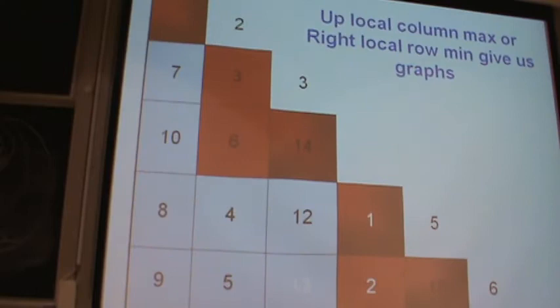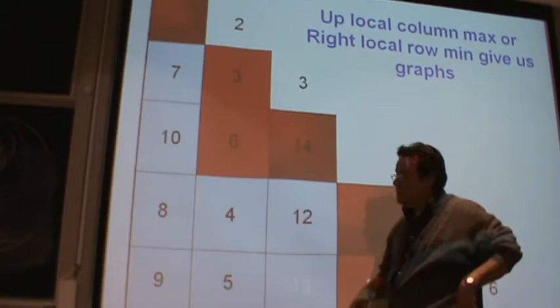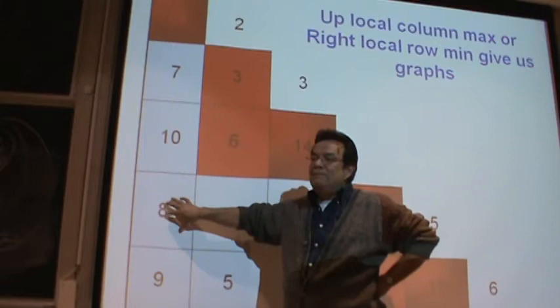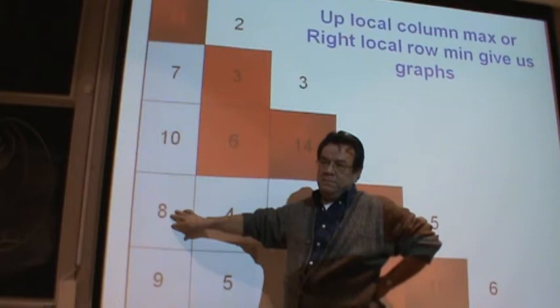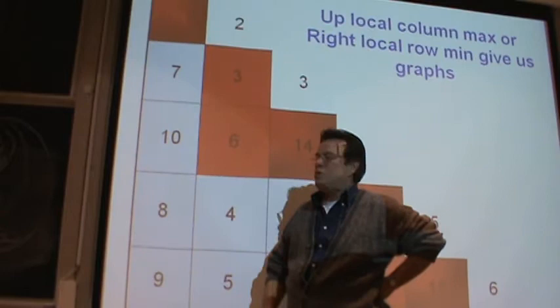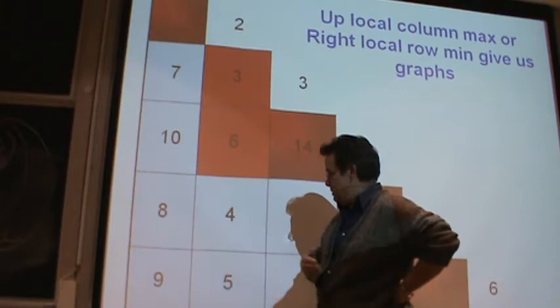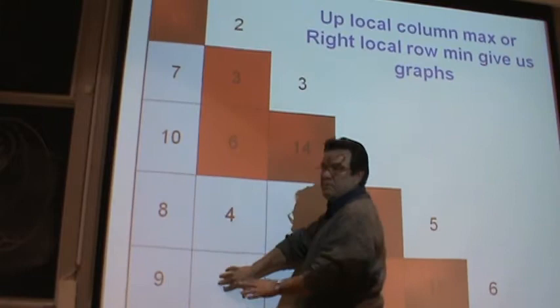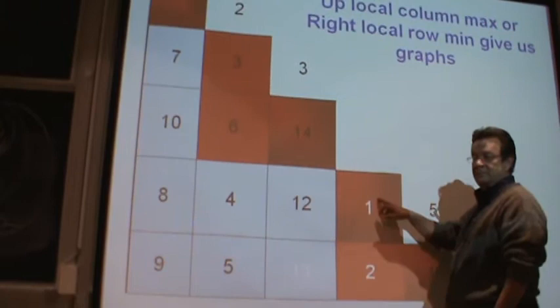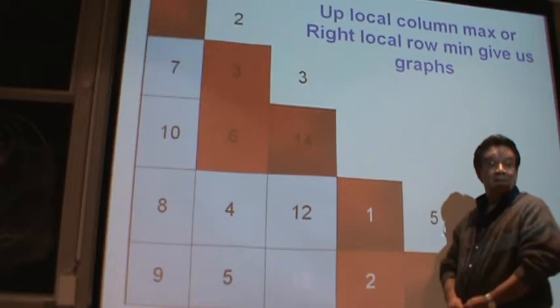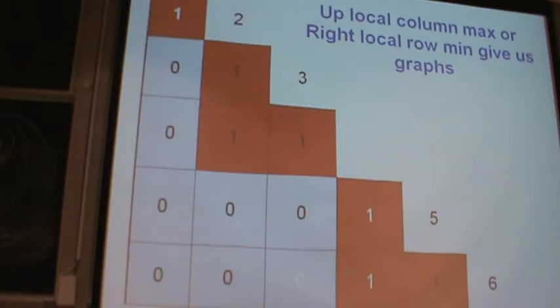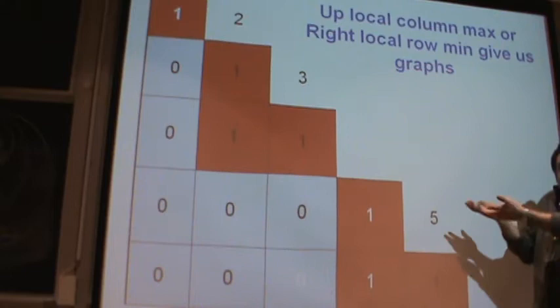I took the same numbers as before, and now I'm going to play Abelo's game. You look at any box and ask: is that box bigger than everything above it in its column? If it's bigger, you paint it red. If it's not, you paint it blue. For example, this entry is not bigger than everything above — so it's blue. But this entry: 2 is bigger than 1, so it's red. Zeros and ones — it's the same thing as the columns. And that's a graph.